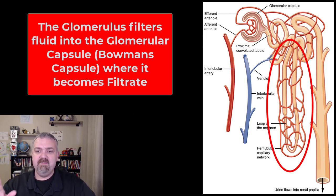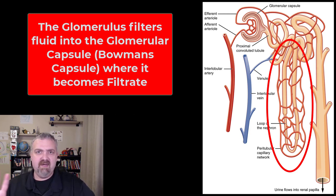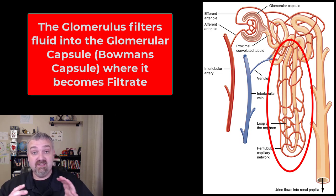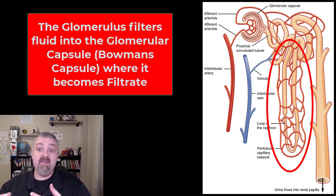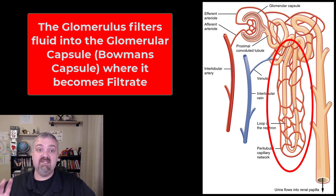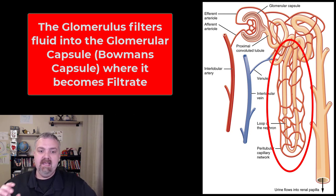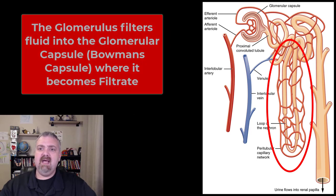Notice we also have the peritubular capillary network, and the straight arterioles called vasa recta. These blood vessels are important because we just lost 50 gallons of fluid and a whole bunch of good stuff like vitamins, minerals, glucose, and amino acids. We have to actively reabsorb that and get it back into our blood. That's why you see that massive blood supply surrounding each individual nephron.